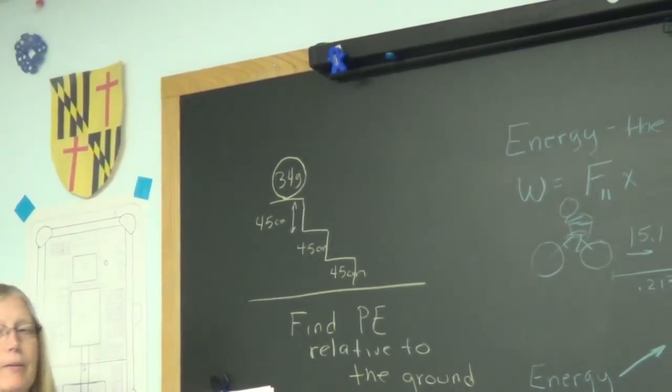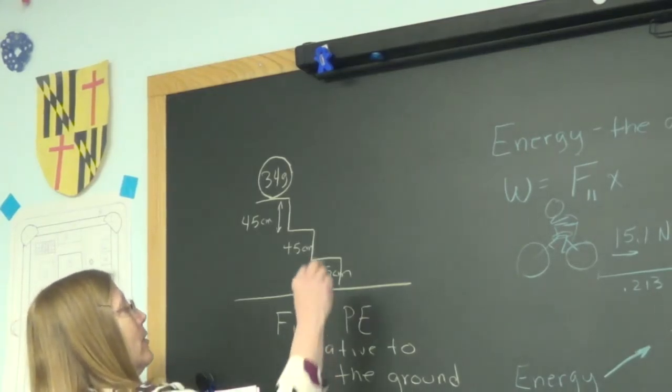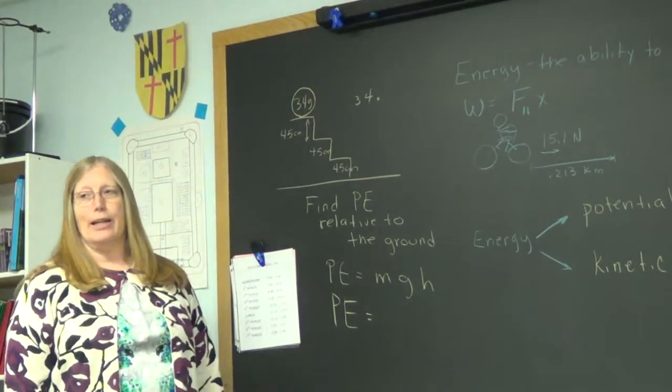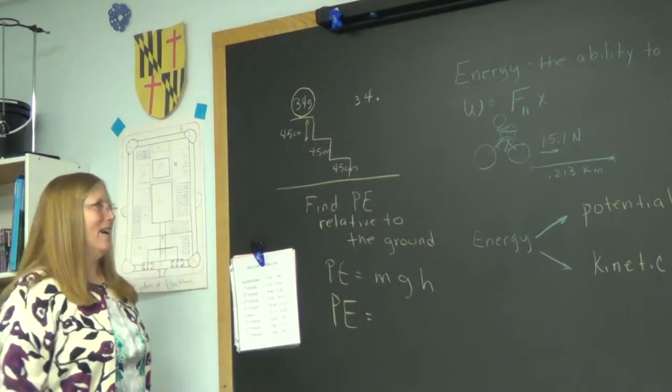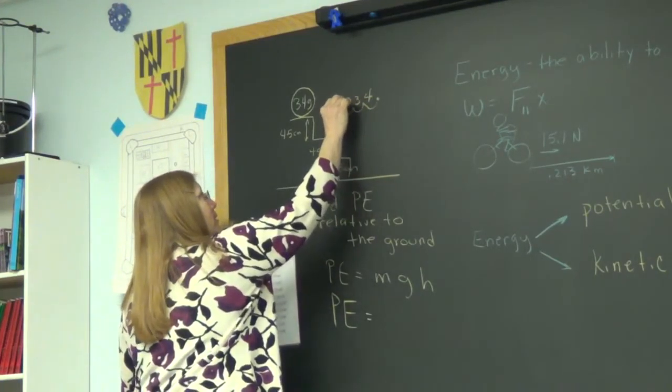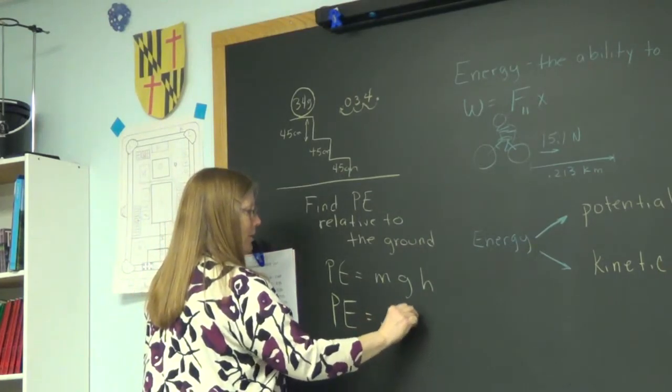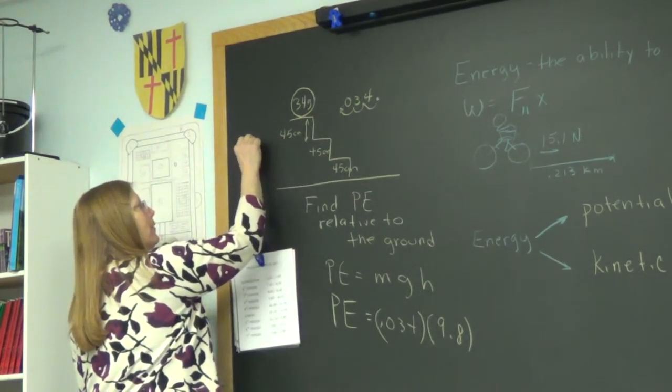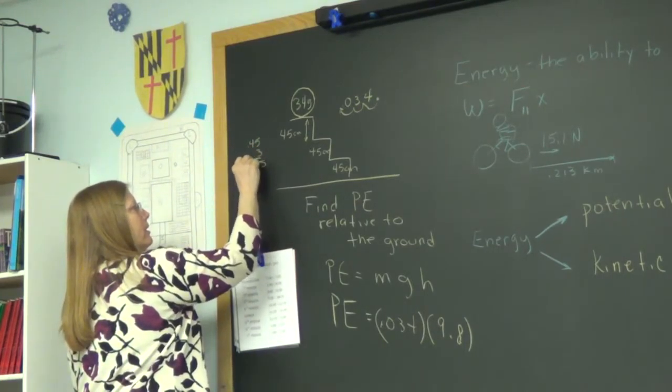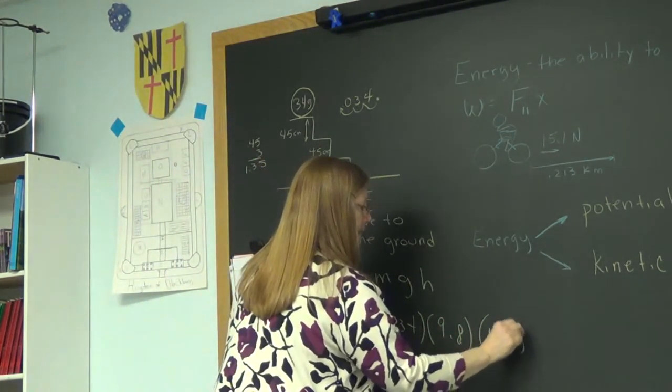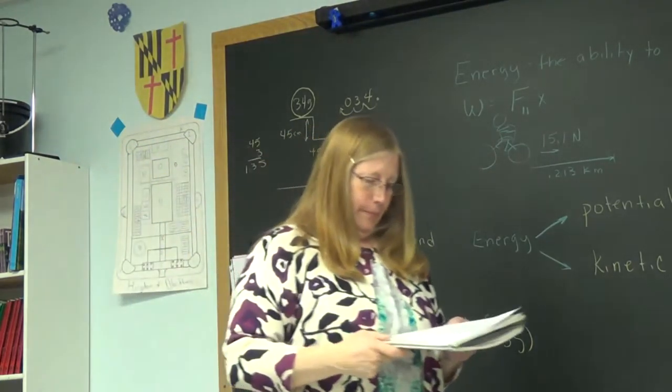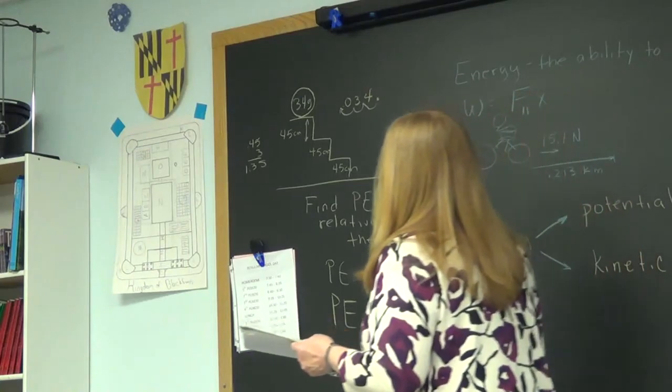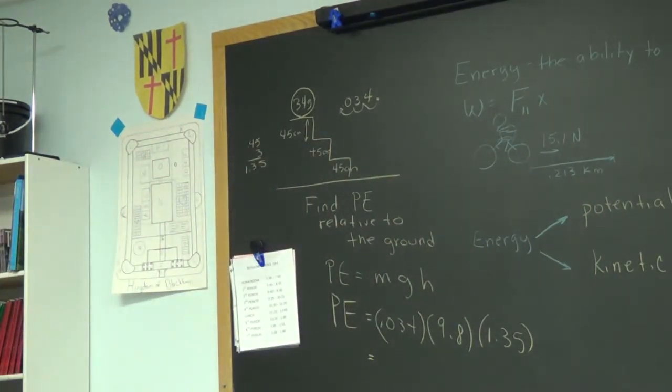So I want you to find the potential energy that this object has where it is. Find PE relative to the ground. So we'll say this is the ground. Why do I have to say relative to the ground? Well, we know PE is MGH, so we've got to know what height to put in. So if I'm talking about what's the potential energy from this step to this step only, then it'd be a different number. So relative to the ground we have to get a height. So talk me through this one.